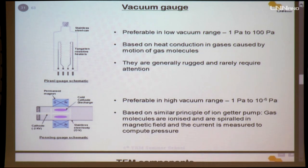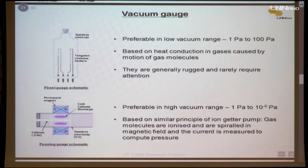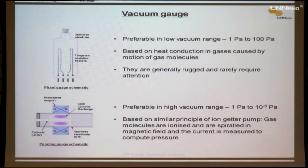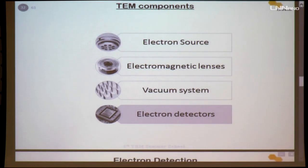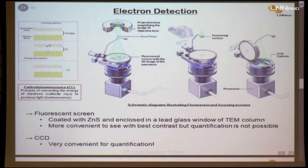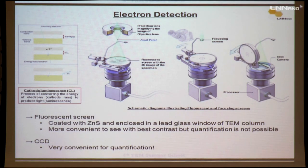The final component is electron detectors. After the electron beam passes through the specimen, we get an electron beam out — but we can't see electrons with the naked eye. The main process is cathodoluminescence — converting electron energy to light. When the electron beam hits a semiconductor, the extraction of electrons from the valence band to the conduction band produces light. Below the projector lens, we have two types of detection: the fluorescent screen, coated with zinc sulfide (a luminescent material), enclosed in lead glass to avoid x-rays. The fluorescent screen is convenient for viewing contrast but cannot be used for quantification.